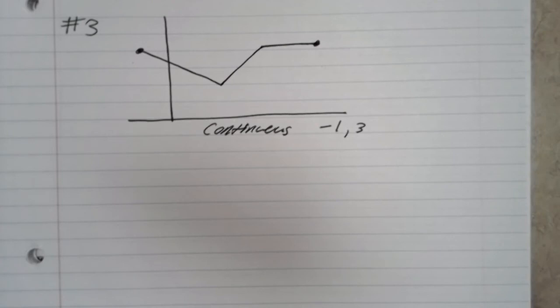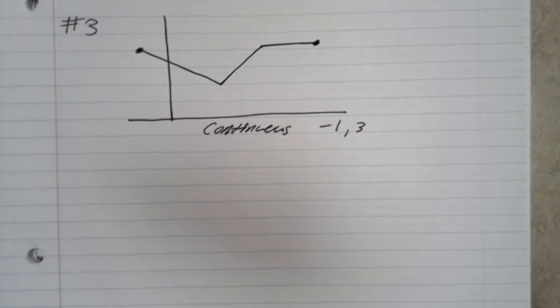For continuity on intervals, you just use left and right continuity at the end points, and this is correct. There are no jumps or asymptotes or anything that would cause this to be discontinuous.